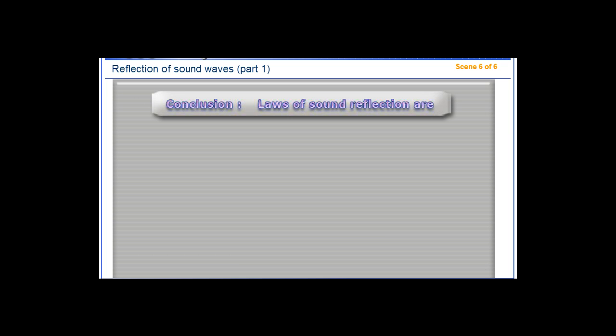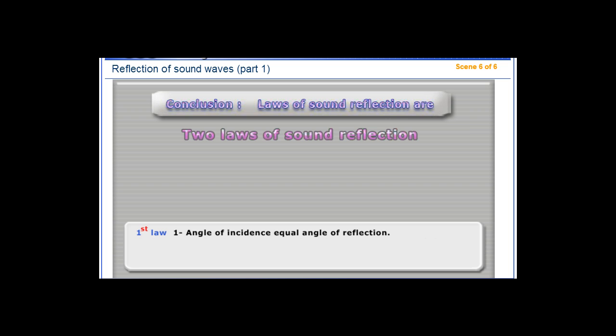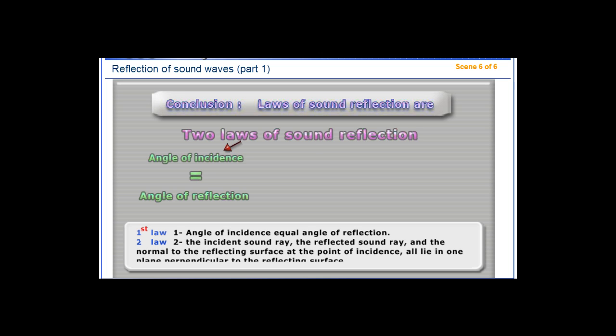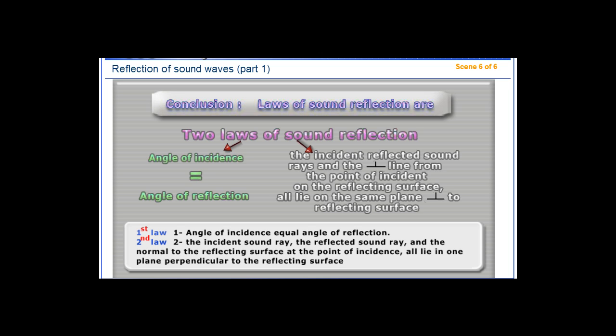Angle of incidence. The incident sound ray, the reflected sound ray, and the normal to the reflecting surface at the point of incidence all lie in one plane perpendicular to the reflecting surface.